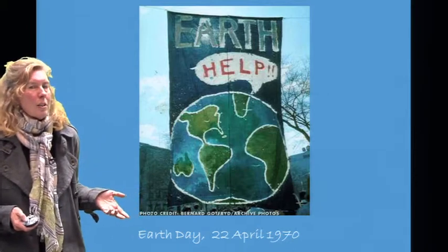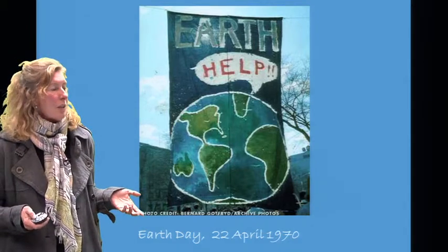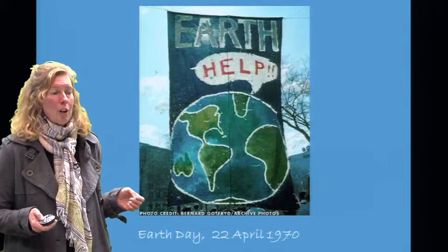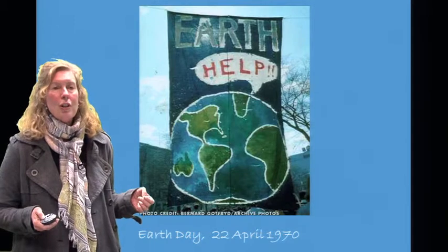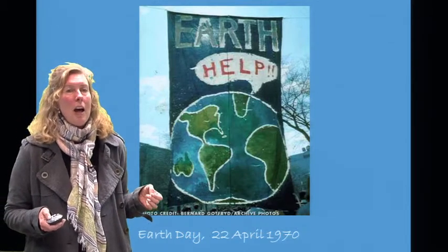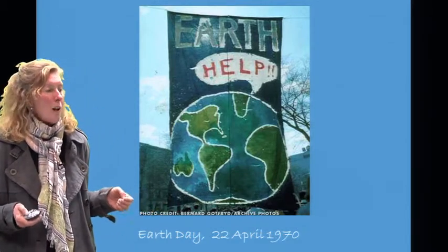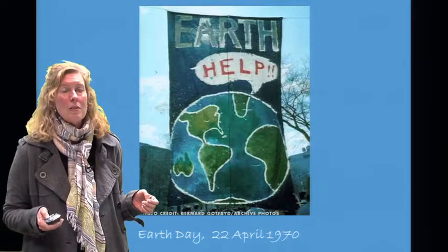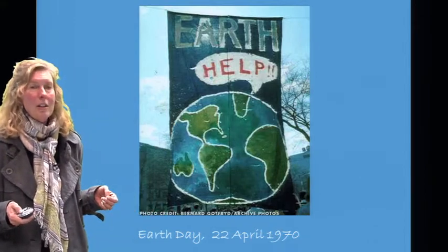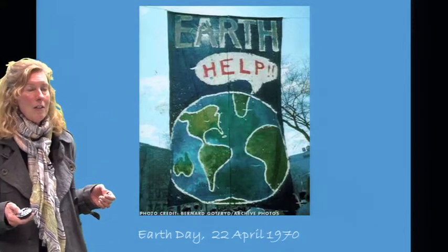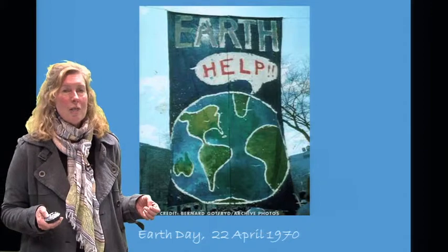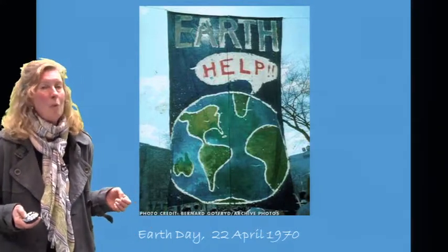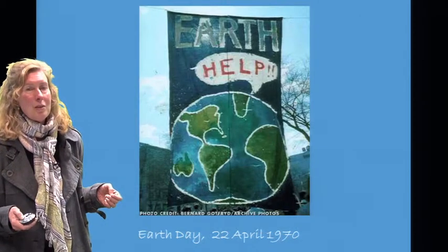Two years later, in 1970, Earth Day was really a cry for help. People noticed that there were extinctions, pollution, overpopulation, and on this day, 20 million Americans demonstrated across the country for a more sustainable planet. Outcomes of this in the Nixon administration in the early 70s include the formation of the EPA, the Environmental Protection Agency, the Clean Air and Water Acts, and the Endangered Species Act.